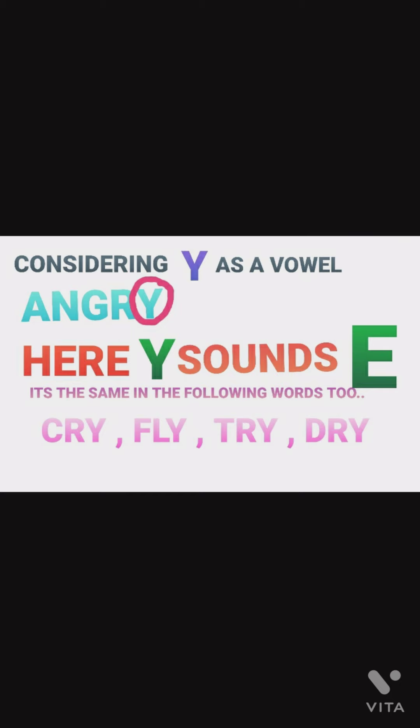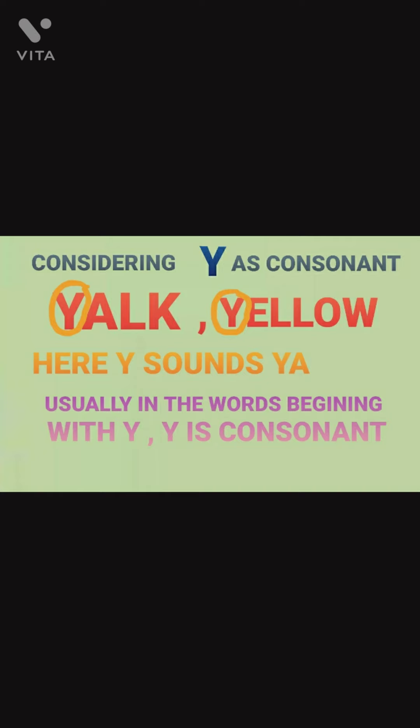Now, let's see some examples where we will come to know why we consider Y as a consonant. Considering Y as a consonant: 'yak', 'yellow', 'your' — Y sounds like Y. Usually, in words beginning with Y, Y is a consonant. 'You', 'yours', 'yoke' — in all these, we can find that Y is an example of a consonant.